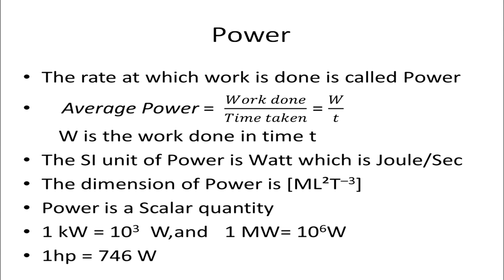Now let's come to power. The rate at which work is done is called power. Mathematically, average power equals work done divided by time taken. The SI unit of power is Watt, which equals Joule per second, and its dimension is ML²T⁻³. Power is a scalar quantity — it has only magnitude, no direction. Different units include: 1 kilowatt = 10³ Watt, 1 megawatt = 10⁶ Watt, and 1 horsepower = 746 Watt.